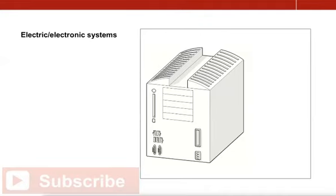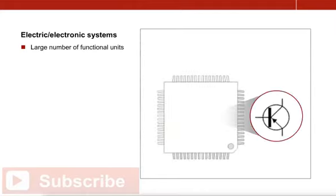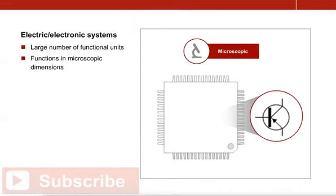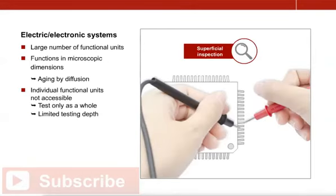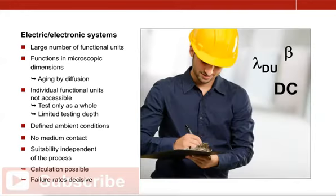In electronic systems such as programmable logic controllers, a single component often comprises a number of functional units, which, like the transistors in an integrated circuit, are microscopic in size. In this case, aging and failure are mainly caused by diffusion processes that occur on the atomic level. Only the component as a whole, and not the individual functional units, can be tested, which means that the testing depth is limited. However, such systems are mainly used in a defined environment, without contact with the process medium. As a result, their suitability does not depend on the process conditions. This is why failures can conveniently be described statistically.